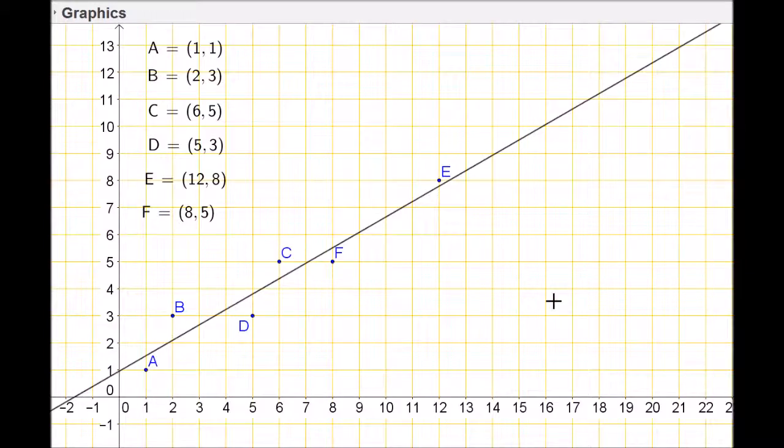For example, now that we have this relationship, we can say, what would happen if x was 19? If x was 19, what would be the appropriate output value? I can look at this graph and follow it up to the curve, and I can see it's just below this line. That line is 12, so it looks like it's around 11.9, perhaps.